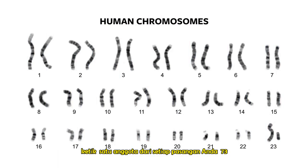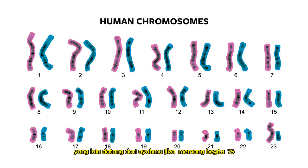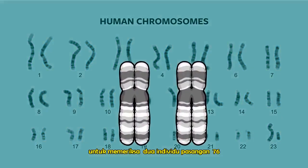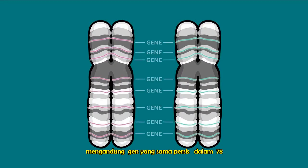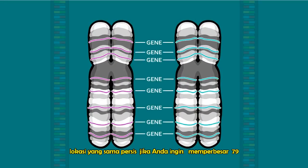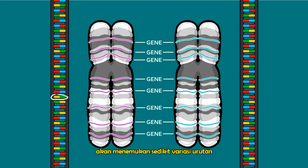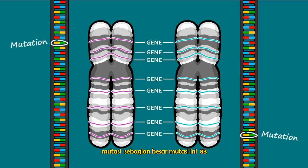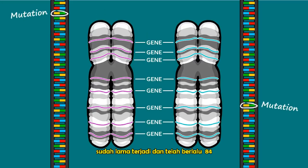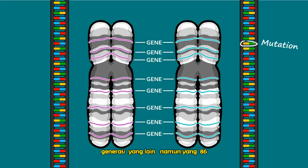One member of each pair of your chromosomes came from your mother, the other came from your father. If you were to examine the two individuals of a pair, you'd find that for the most part, both contain the exact same genes in the exact same locations. If you were to zoom into the actual genetic code, however, you would find slight sequence variations between them — these are the results of mutations. Most of these mutations happened long ago and have been passed down from parent to child for many generations.